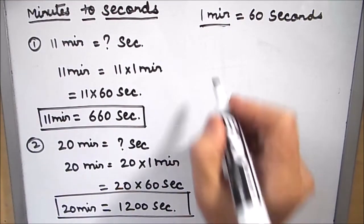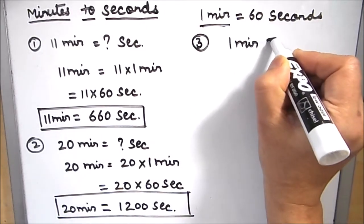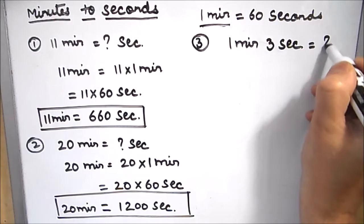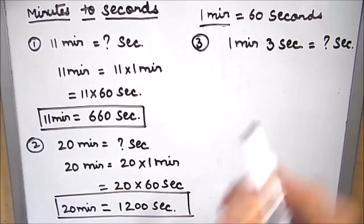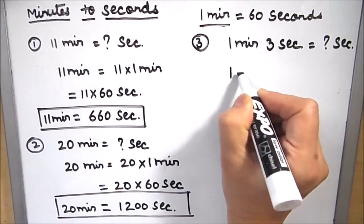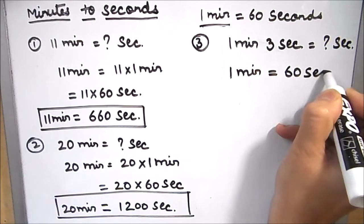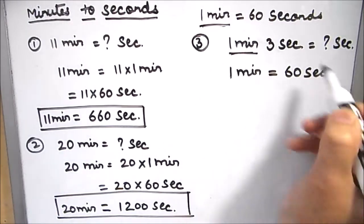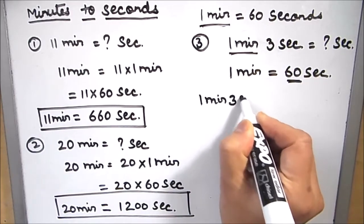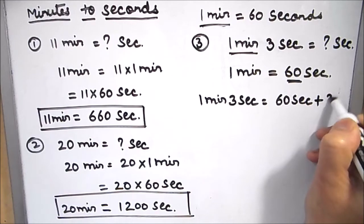Now let's have one more example where there is 1 minute and 3 seconds. You need to convert 1 minute 3 seconds to seconds. For this type of example, we will keep the seconds part as is and we will convert 1 minute to 60 seconds. So 1 minute 3 seconds is equal to 60 seconds plus 3 seconds.